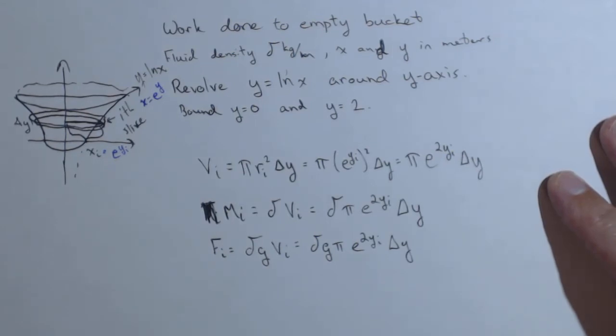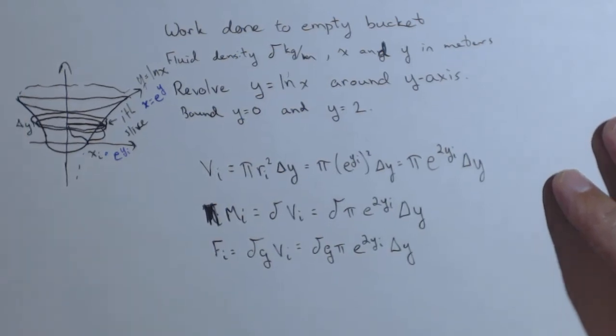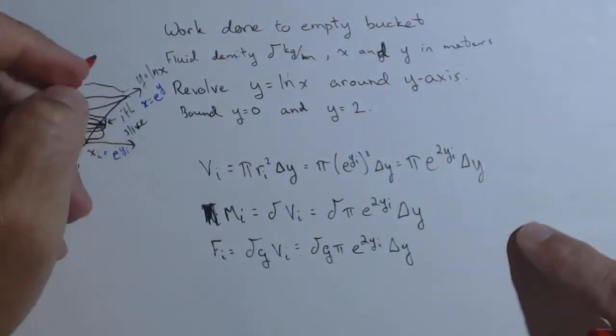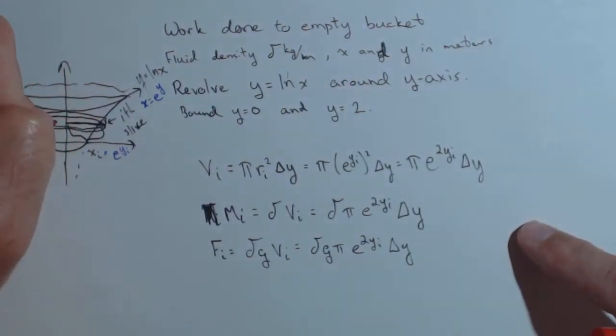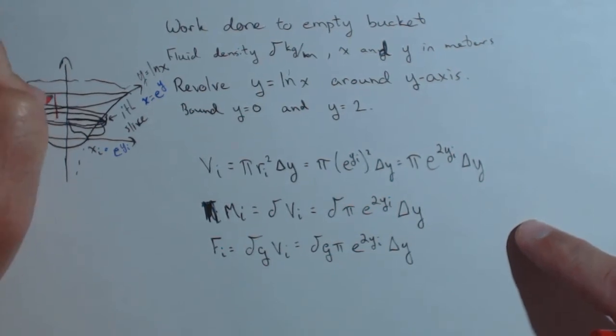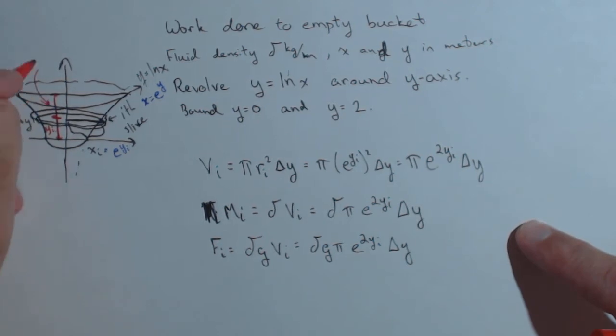Now, we need to look at emptying this tank. This slice, let's use another color so you can see this better, needs to be moved to the top of the tank, from here to here. We know from our axis to here is y_i for that slice. So that makes this distance 2 minus y_i.